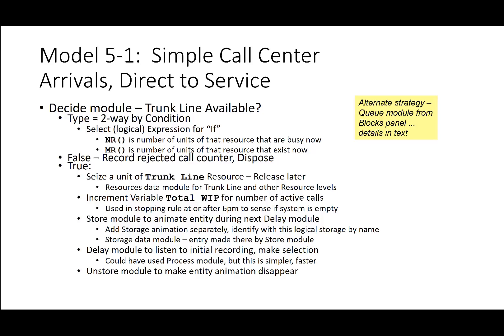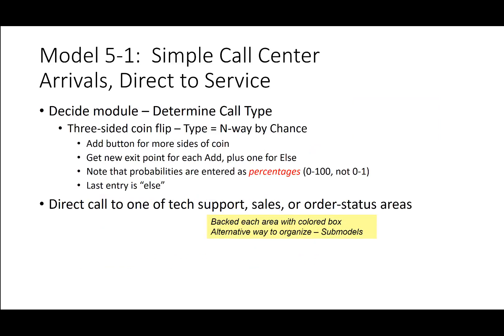An unstore module makes the entity animation disappear. The decide module determines the call type — essentially a three-sided coin flip. You add a button for more sides of the coin, getting a new exit point for each plus one for else. Note that probabilities are entered as percentages, not as 0 to 1. The last entry is else, so the logic flows if, then if not, then if, then else as the last option, directing the call to one of tech support, sales, or order status.